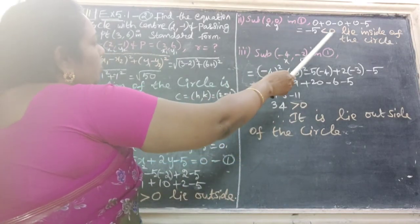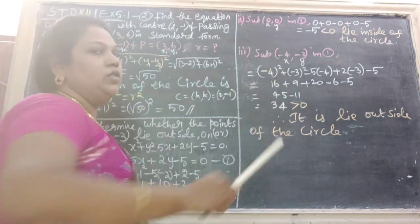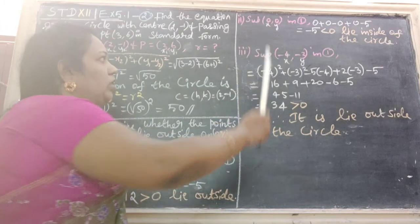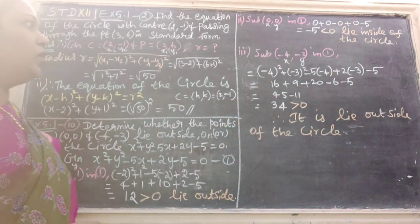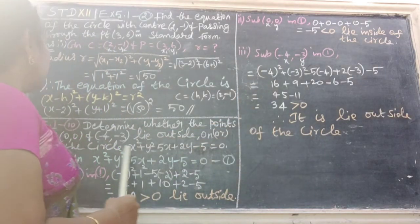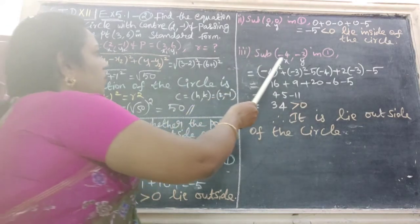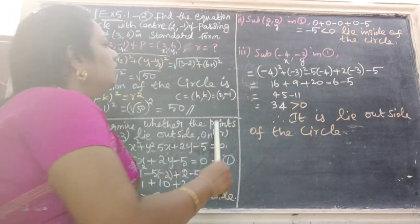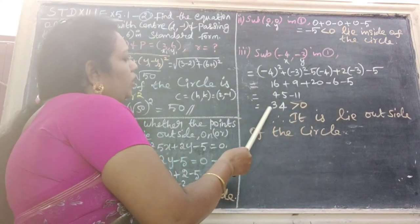Substituting in equation 1, simplifying we get minus 5. Minus 5 is strictly less than 0, therefore it lies inside of the circle. Third point is minus 4 comma minus 3. Substitute in equation 1.